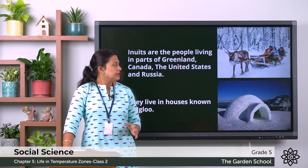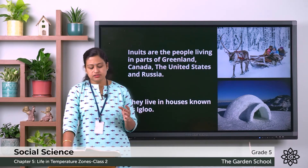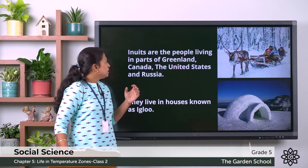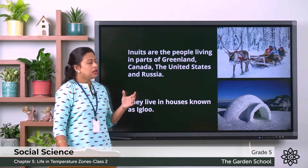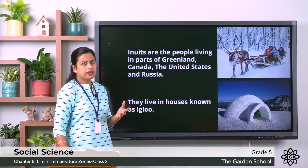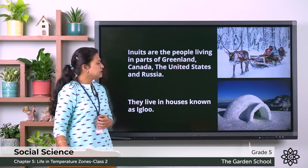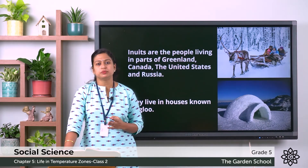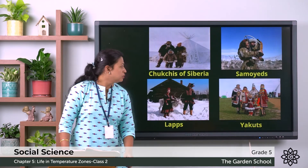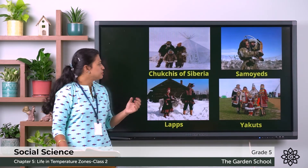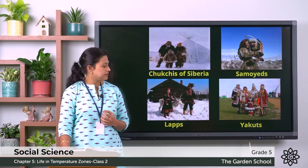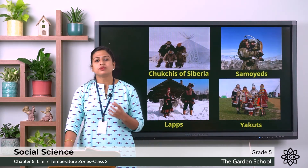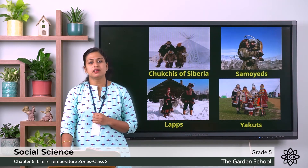Since this region is extremely cold, very few people live here. The Inuits are the people living in parts of Greenland, Canada, the United States and Russia, and they live in houses known as igloo. Some other groups of people who live in this region are the Chukchas of Siberia, Samayats, Laps and Yakuts.